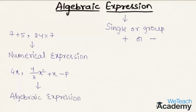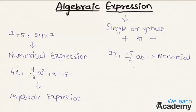These algebraic expressions are categorized according to the number of terms in them. For example, we have the expressions 7x and minus 5 divided by 6 ab. If an expression contains only one term, then we call it a monomial expression. Similarly, we have another example: 7x plus 5. If an expression contains two terms, then we call such expression a binomial expression.